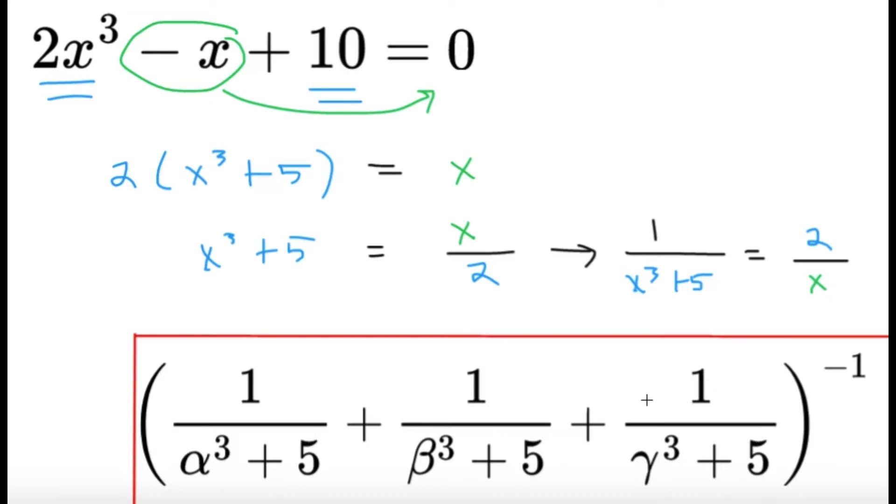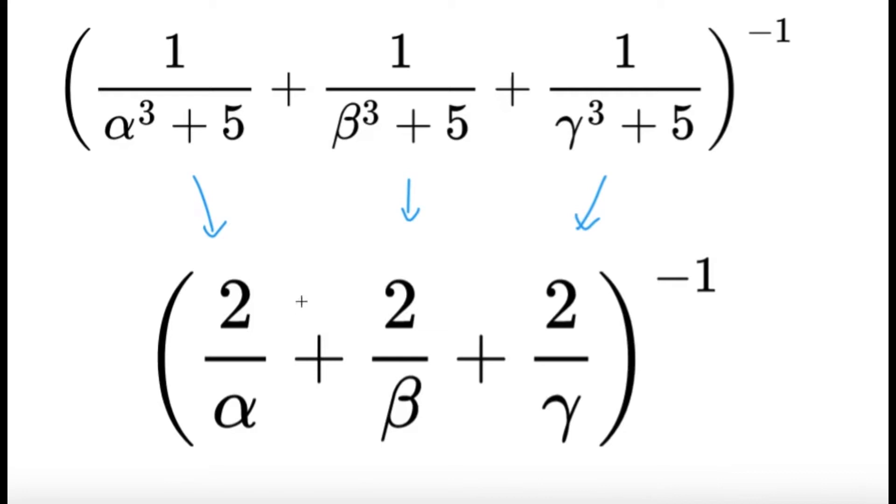So this expression that we want, we can rewrite it as follows. So as you can see here, essentially we're just asked to get the reciprocal of 2 over alpha plus 2 over beta plus 2 over gamma.